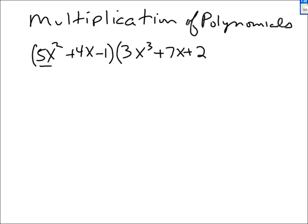There are three terms in the first bracket and coincidentally three terms in the second bracket. Each term in the first bracket must be multiplied by each term in the second one. It doesn't matter how you choose to do it, but in the end each term in the first bracket gets multiplied by each term in the second. It pays to do it in some logical order.